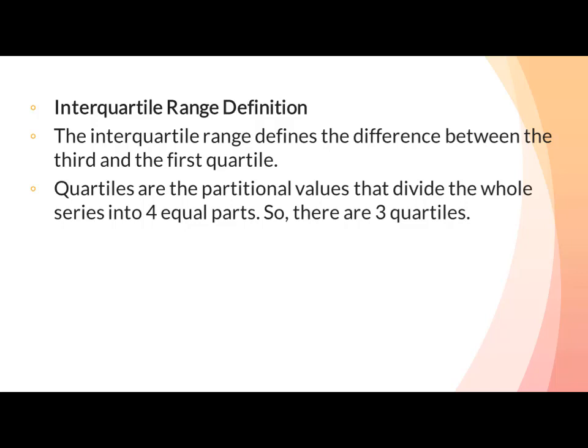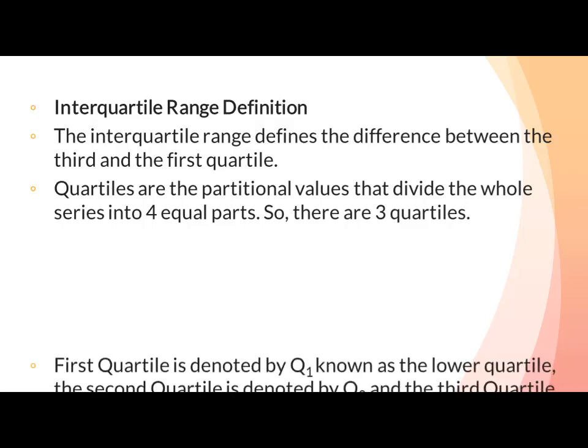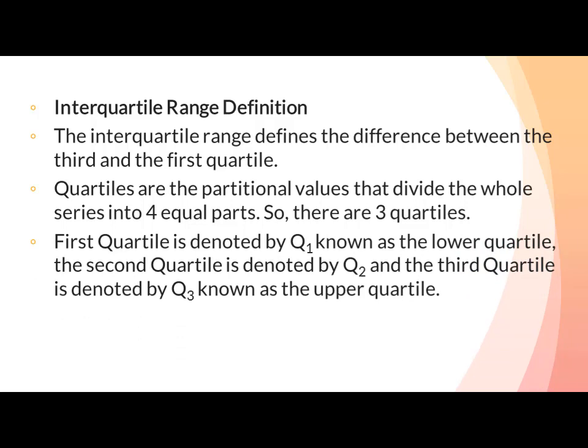Quartile کسی بھی data set کو four equal parts میں divide کرتا ہے اور کسی بھی data set میں تین quartile ہوتے ہیں: Q1, Q2 اور Q3۔ Quartiles are the proportional values that divide the whole series into four equal parts. There are three quartiles: the first quartile is denoted by Q1 as the lower quartile, the second quartile is denoted by Q2, and the third quartile is denoted by Q3, known as the upper quartile.